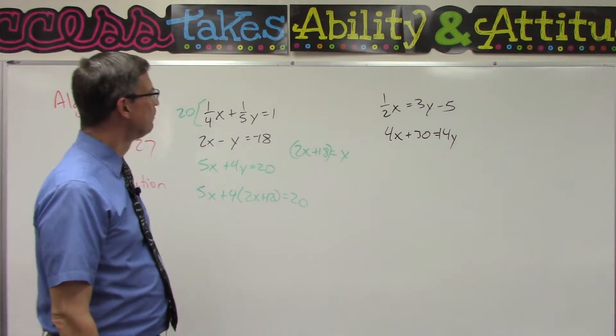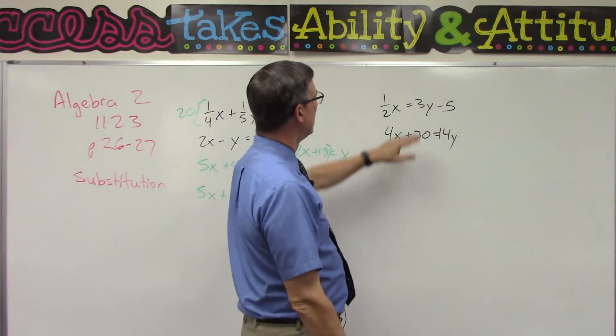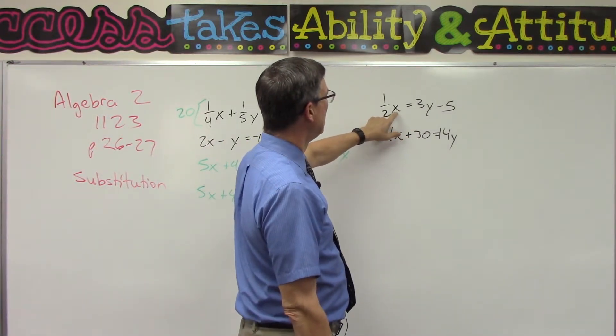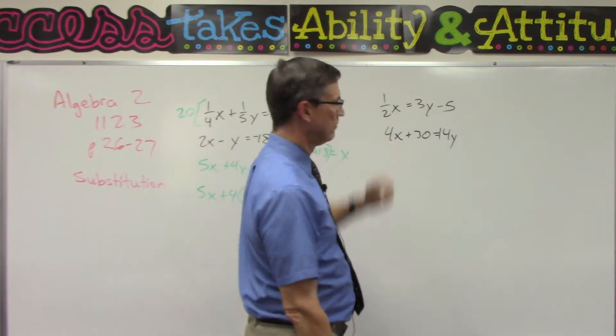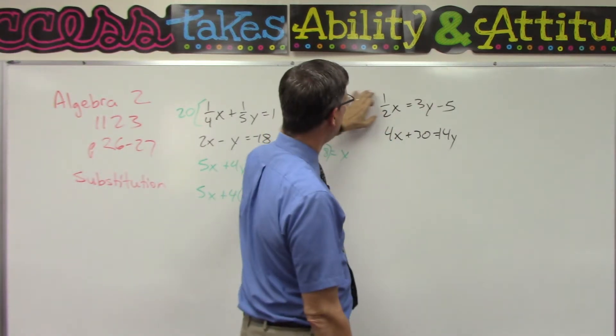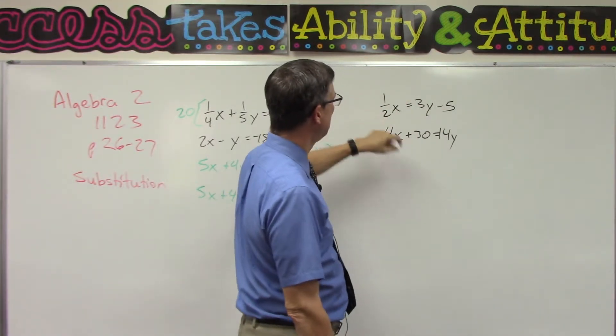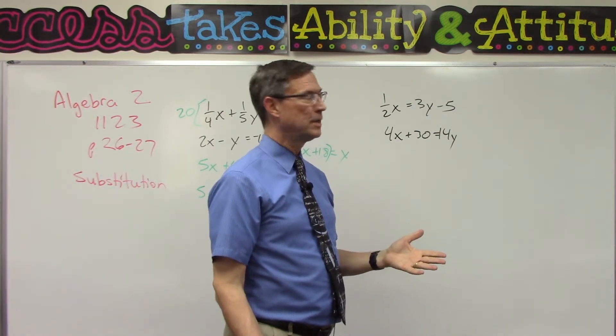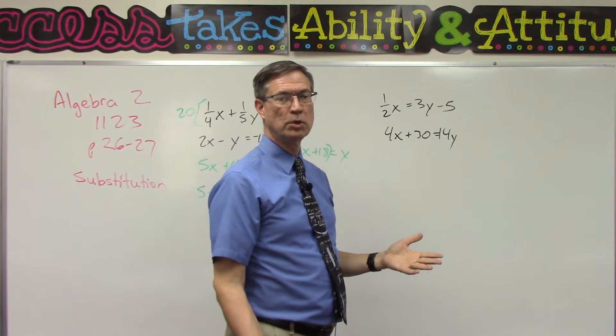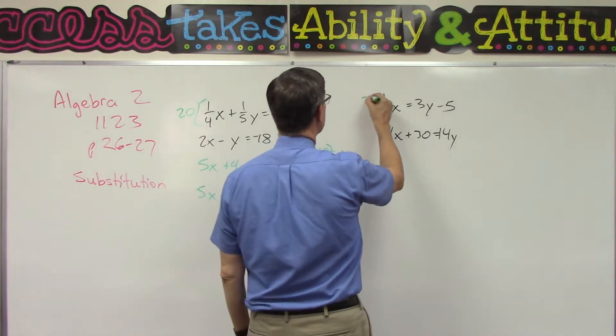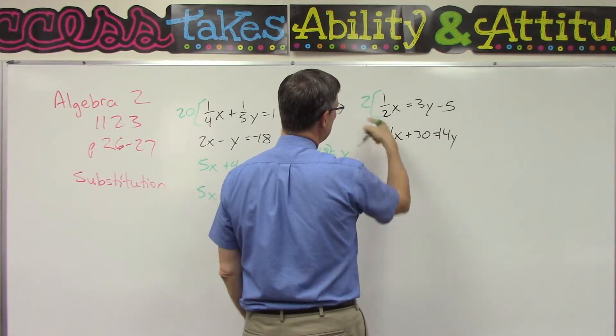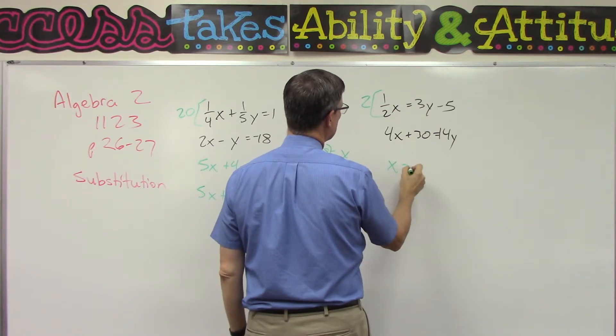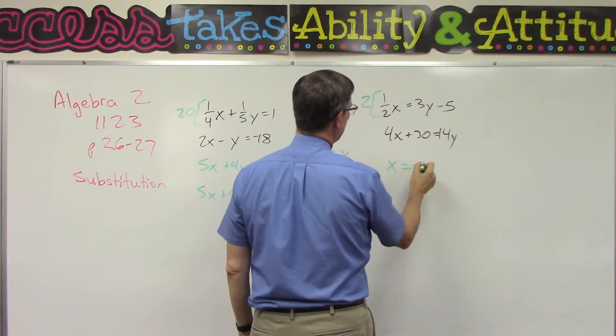Looking over here, similar tip: let's get rid of the fraction. What could I multiply through by to get rid of this denominator? Whatever the denominator is. In this case, I only have one denominator, so I'll just multiply everything by 2.